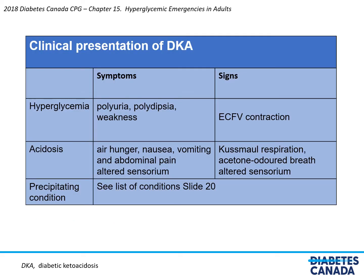The clinical presentation of DKA is as follows. Symptoms of hyperglycemia include polyuria, polydipsia, and weakness. Symptoms of acidosis include air hunger, nausea, vomiting, abdominal pain, and altered sensorium. Signs of hyperglycemia are ECF volume contraction, and signs of acidosis involve Kussmaul respiration, acetone-odored breath, and altered sensorium.